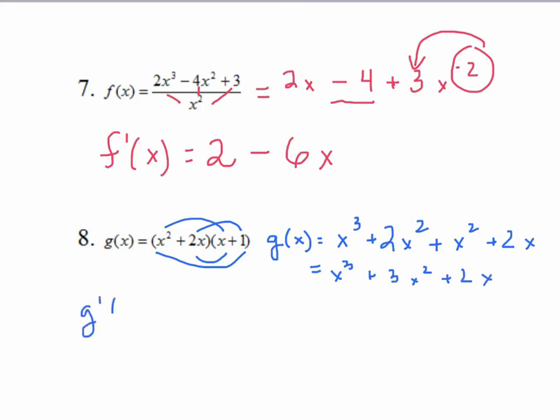And then I could rewrite that to say x cubed plus 3x squared plus 2x. And now when I go to take the derivative, g prime of x is equal to 3x squared plus 6x plus 2.